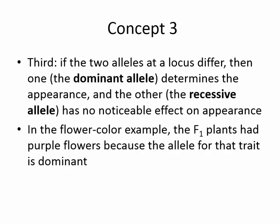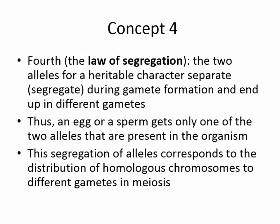The third concept: if the two alleles at a locus differ, then the dominant allele determines the appearance, and the recessive allele has no noticeable effect. In the flower color example, the F1 plants had purple flowers because the allele for that trait is dominant. The fourth concept — also known as the law of segregation — is that two alleles for a heritable character separate during gamete formation and end up in different gametes. An egg or sperm gets only one of the two alleles present in the organism, corresponding to the distribution of homologous chromosomes to different gametes in meiosis.